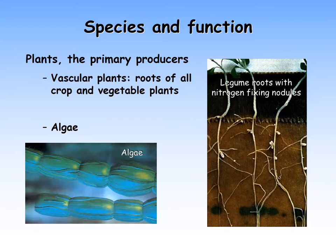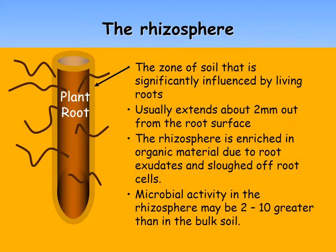Like vascular plants, algae are also photosynthetic — they use sunlight as their source of energy and are able to make their own food. Most algae range in size between 2 and 20 micrometers in diameter. Algae also add a lot of organic material into the soil; some algae excrete sugars into the soil that help to stabilize the soil structure.